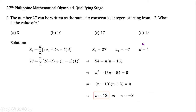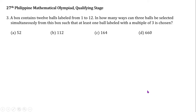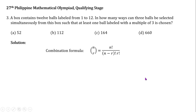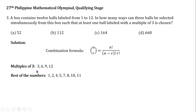The answer is letter D. Question number 3. A box contains 12 balls labeled from 1 to 12. In how many ways can 3 balls be selected simultaneously such that at least 1 ball labeled with a multiple of 3 is chosen? We will use the combination formula: n choose r equals n factorial divided by the product of n minus r factorial times r factorial. There are 4 multiples of 3 — namely 3, 6, 9, and 12 — and 8 non-multiples of 3. We consider 3 cases.